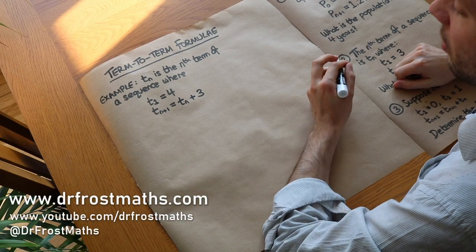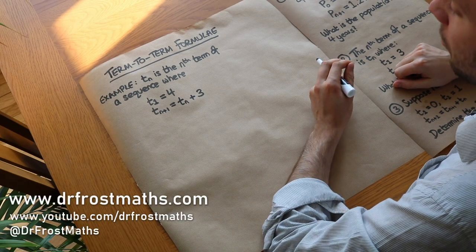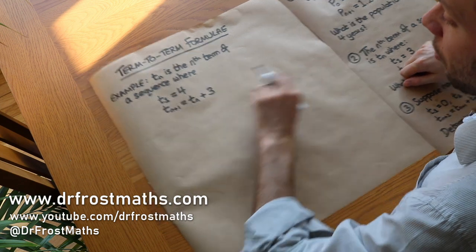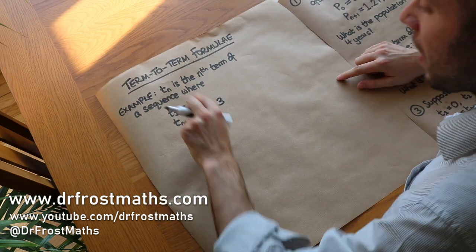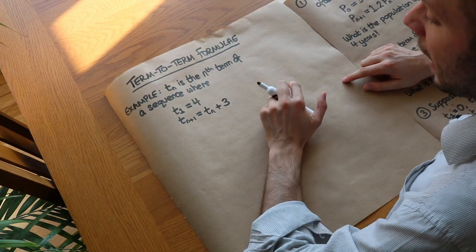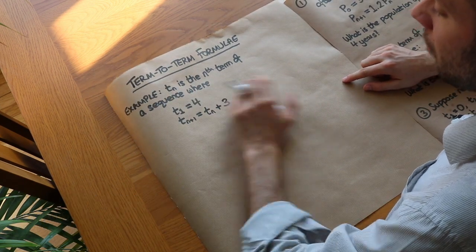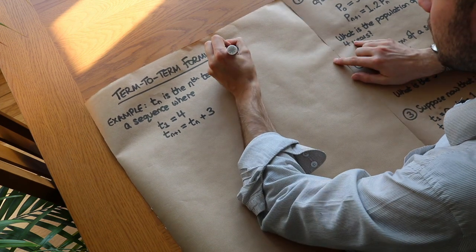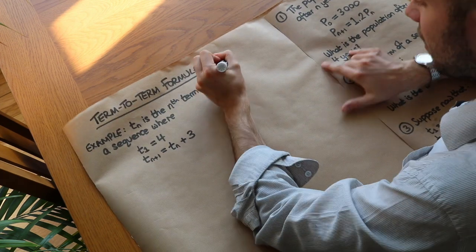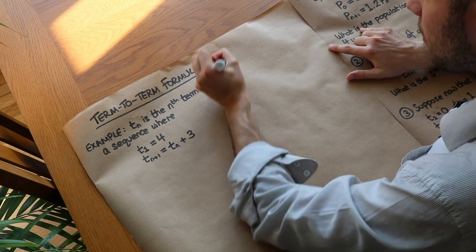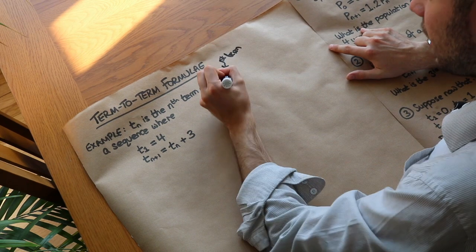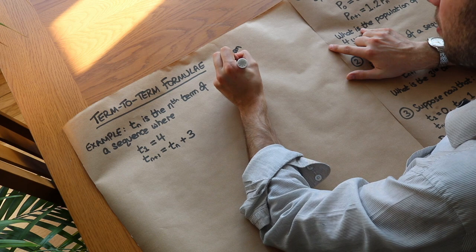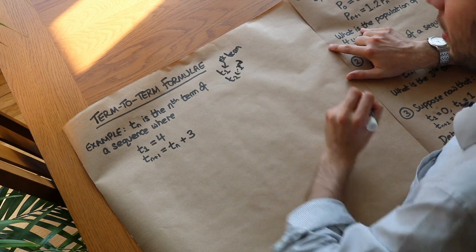Hello and welcome to this video on using term-to-term formulae to generate a sequence. I'm saying that Tn is the nth term of a sequence. So if I had T1, that would represent the first term. If I had T2, that would represent the second term of the sequence.